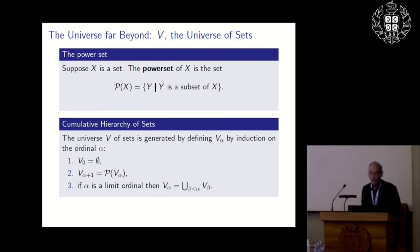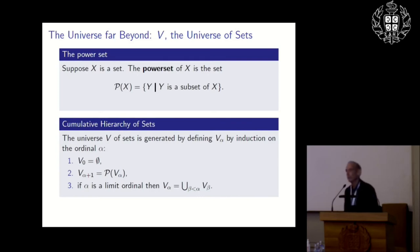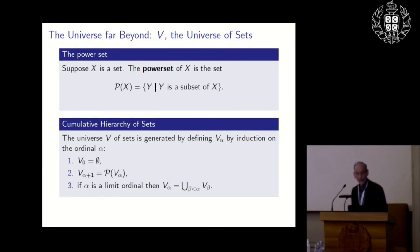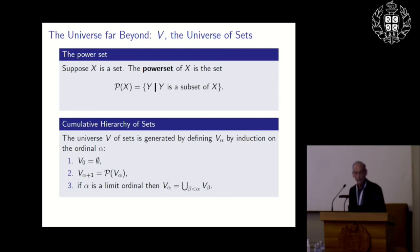With the ordinals and the power set, you can by transfinite induction unravel the universe of sets into stages called the V-alphas, where alpha is an ordinal. V-zero is just the empty set. V-alpha-plus-one is the power set of V-alpha. At limit stages, you take the union of everything you've already defined.